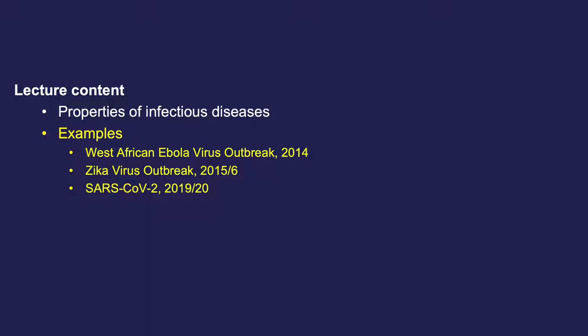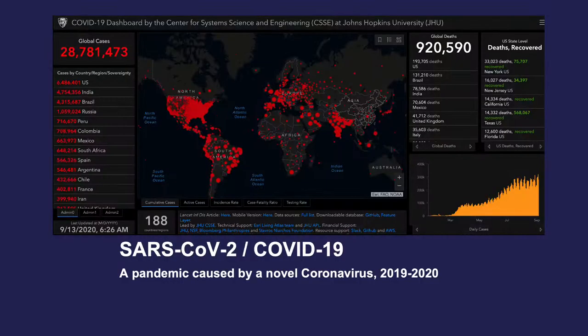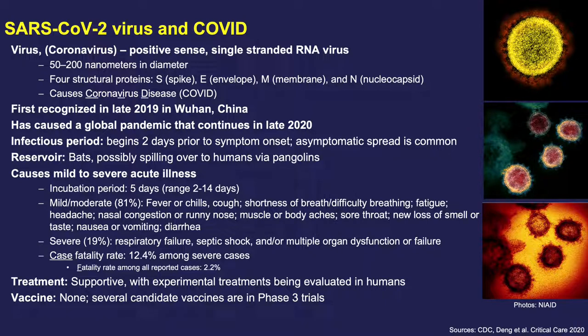The first example of a recently emerging infectious disease is the SARS-CoV-2 or COVID-19 pandemic caused by a novel coronavirus. Coronaviruses are a large family of viruses that can cause illness in animals or humans. In humans, known coronaviruses cause respiratory infections ranging from the common cold to more severe diseases such as SARS, MERS, and COVID-19. SARS-CoV-2 is a spherical single-stranded RNA virus 100 to 200 nanometers in diameter. SARS-CoV-2 refers to the virus, and COVID refers to the disease caused by the virus.